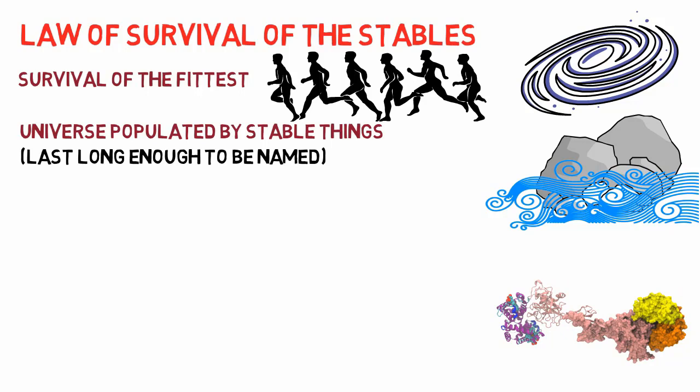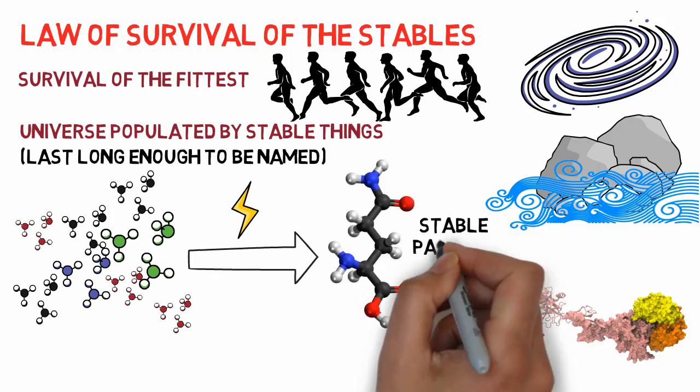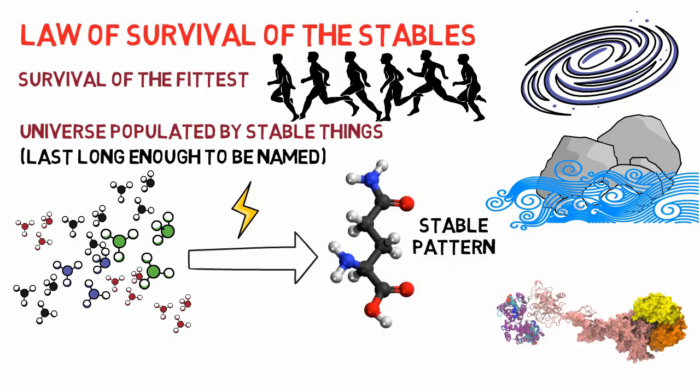Complex atoms have been forming all over the universe since the Big Bang initiated the universe. The simplest example of natural selection is when random groups of atoms in the presence of energy fall into stable patterns, and they tend to stay that way.